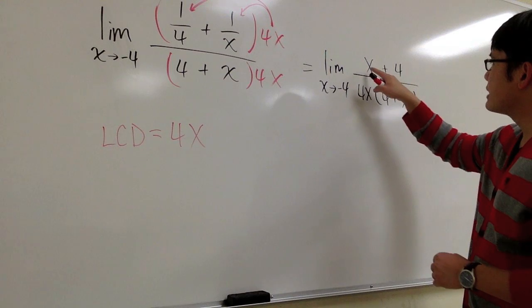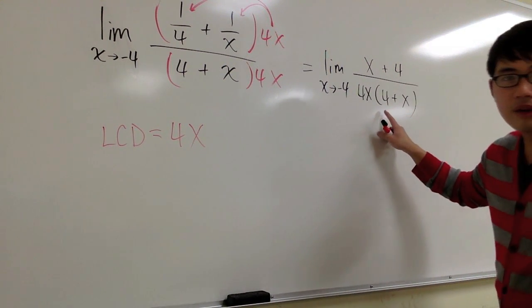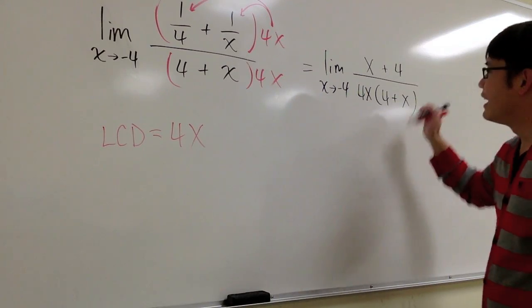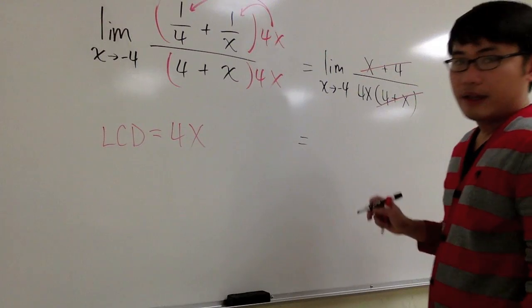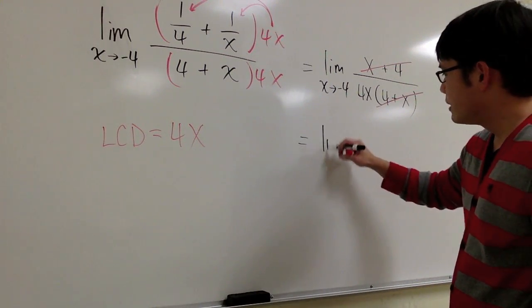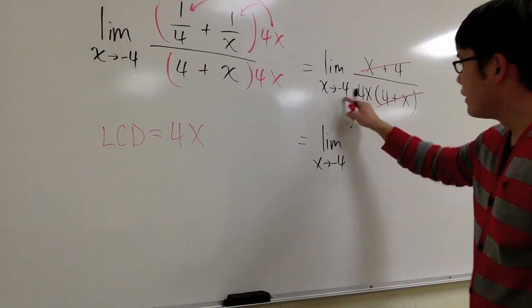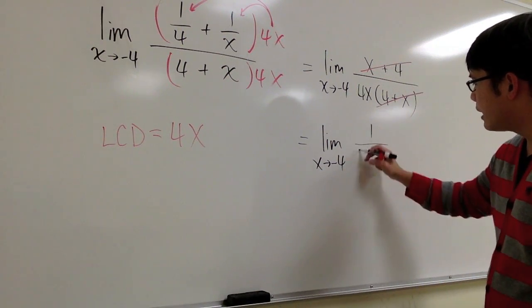And you need to notice that here we have x plus 4, and here we have 4 plus x. They are exactly the same. I can cancel these two out. So in other words, this is going to be the limit when x approaches negative 4. On the top, I have 1. On the bottom, I have 4x.